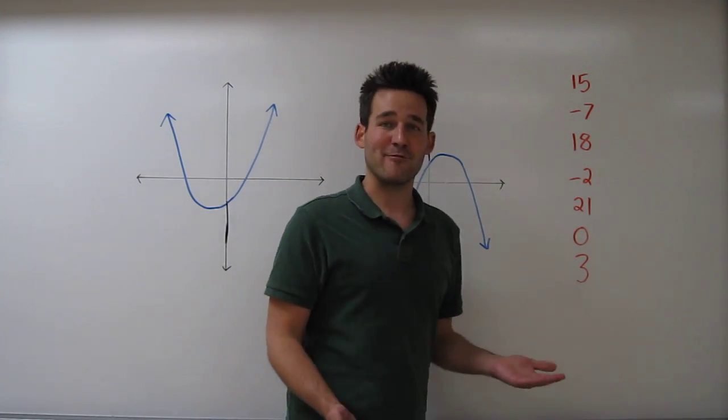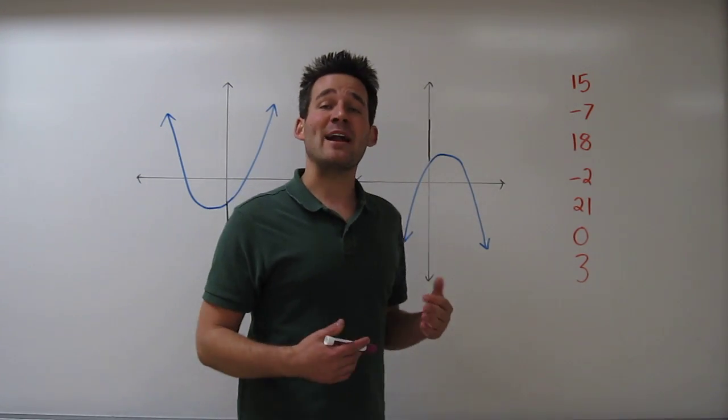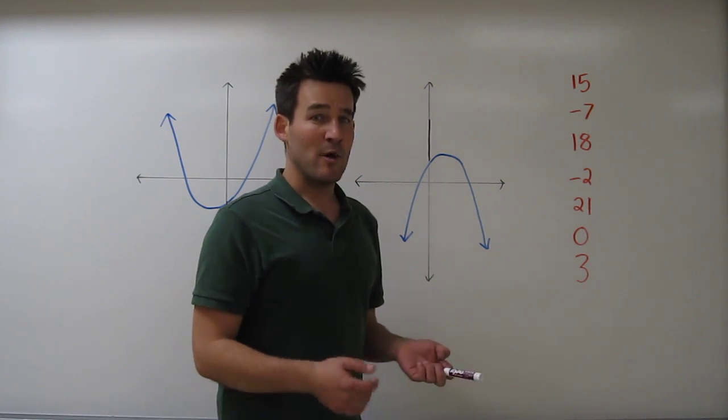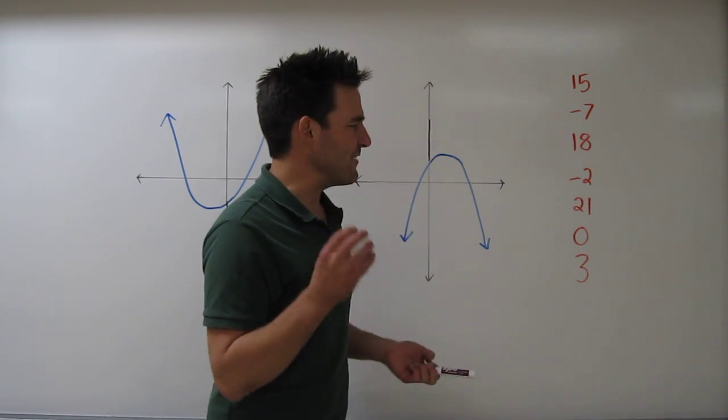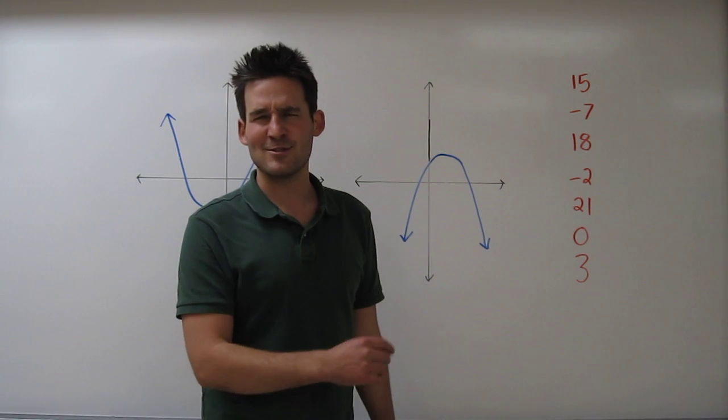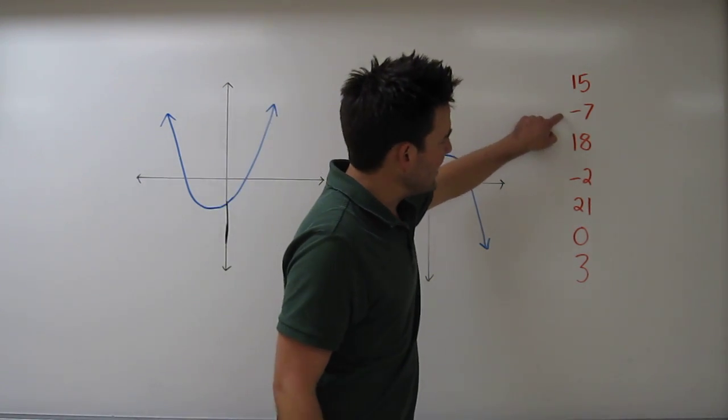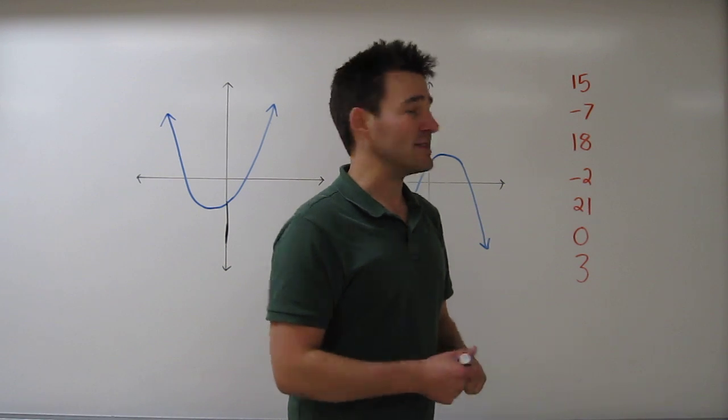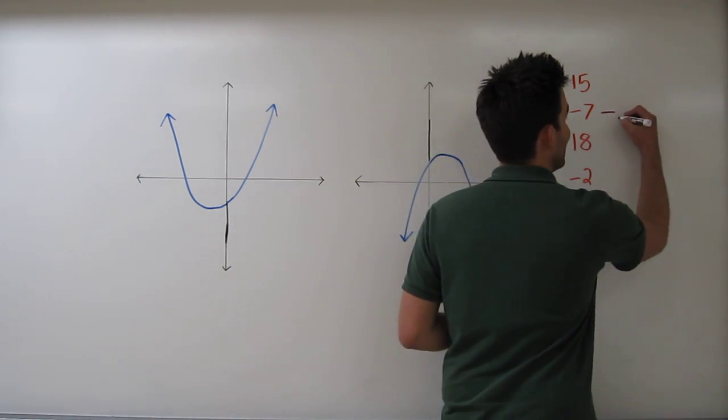Let's start by looking at this list of red numbers. If we were going to try to find the minimum and the maximum number in this list, we would first look through and try to find the smallest number. That will tell us what the minimum is. So looking through this list, it looks like negative 7 is the smallest number. So we call that the minimum.